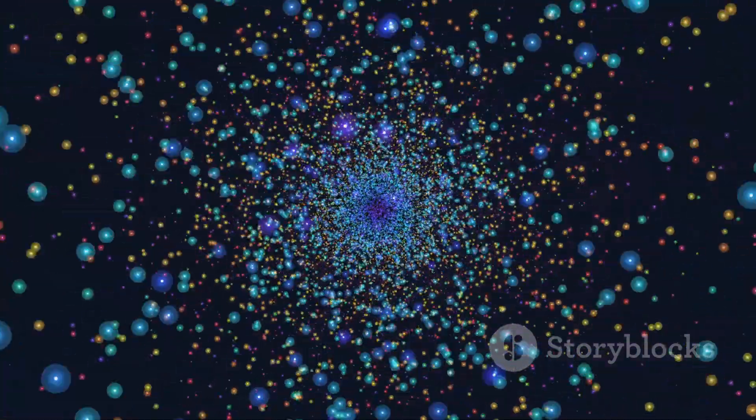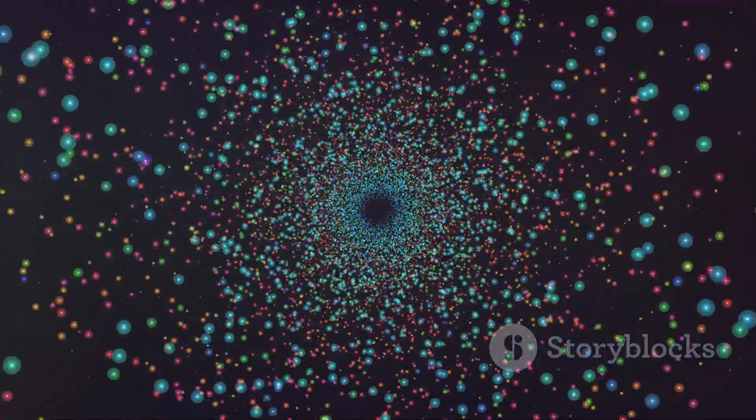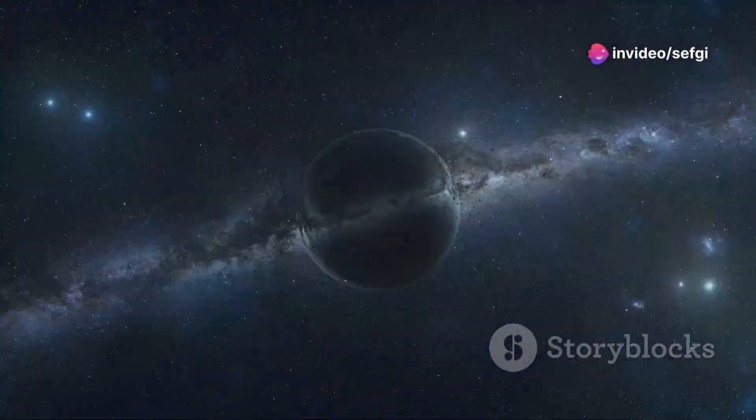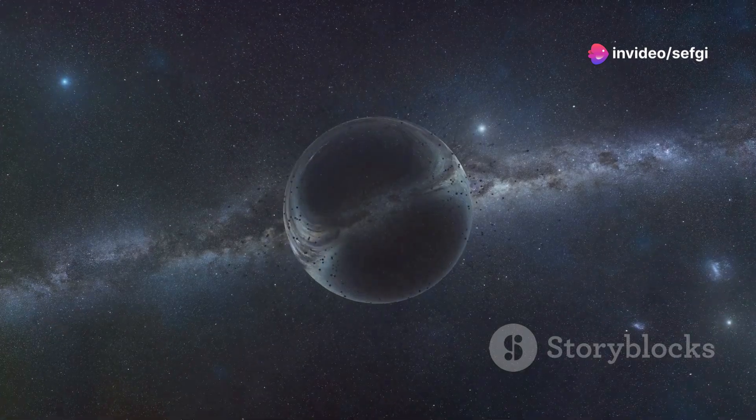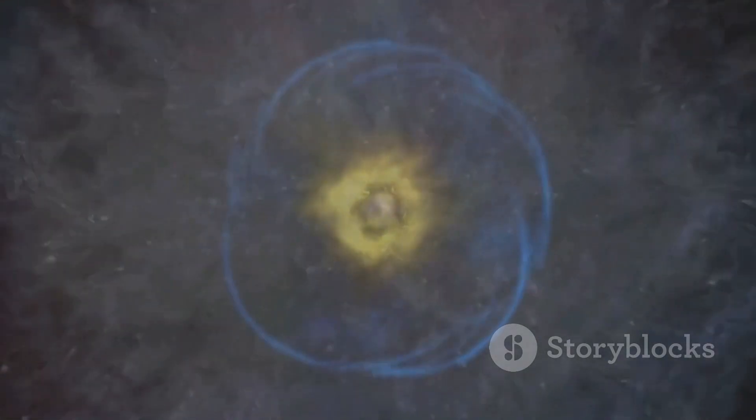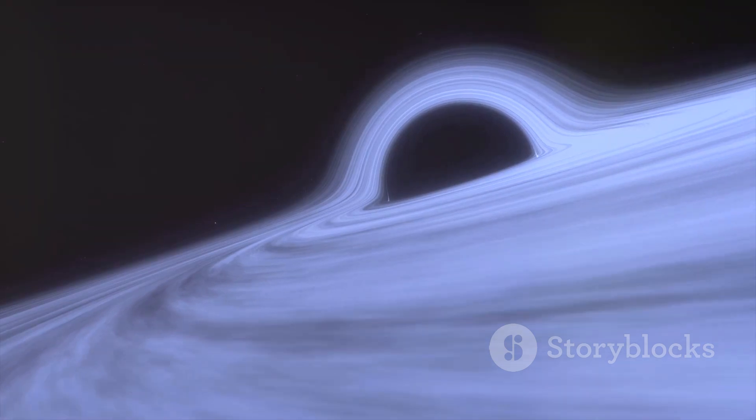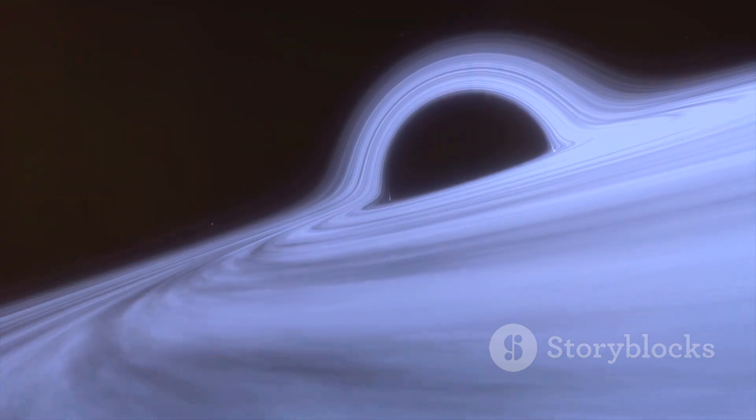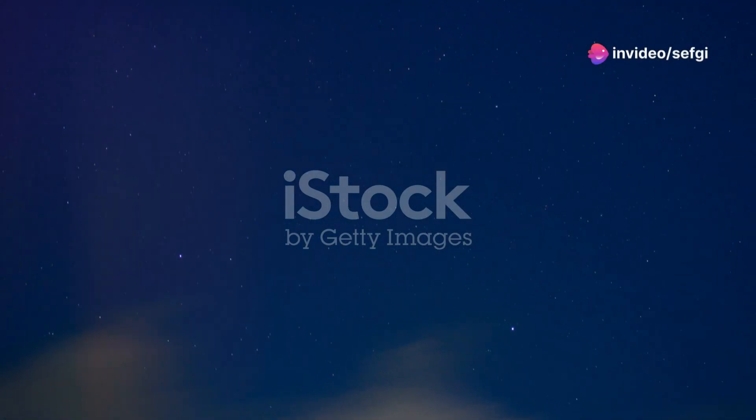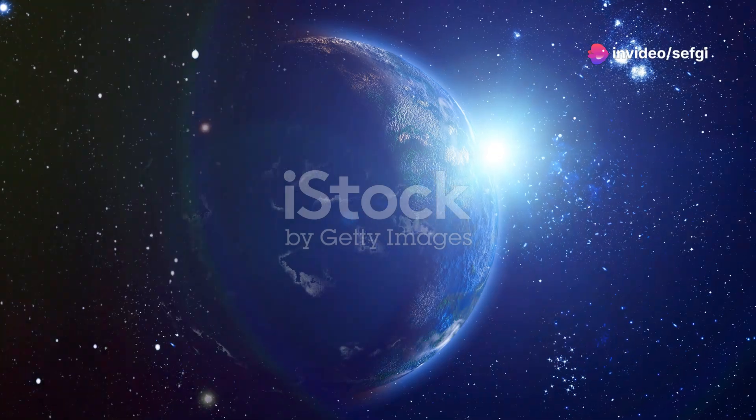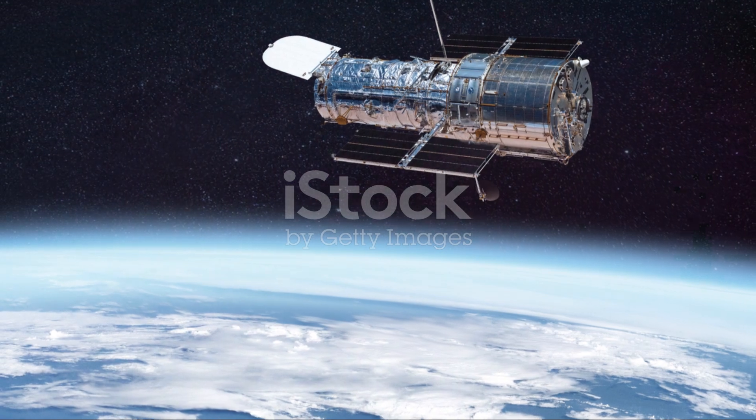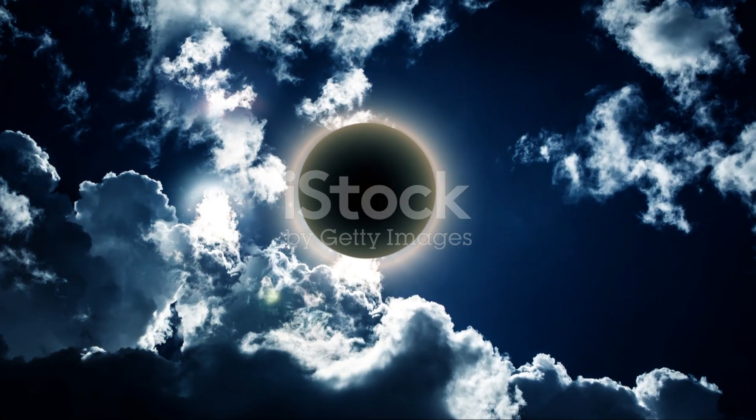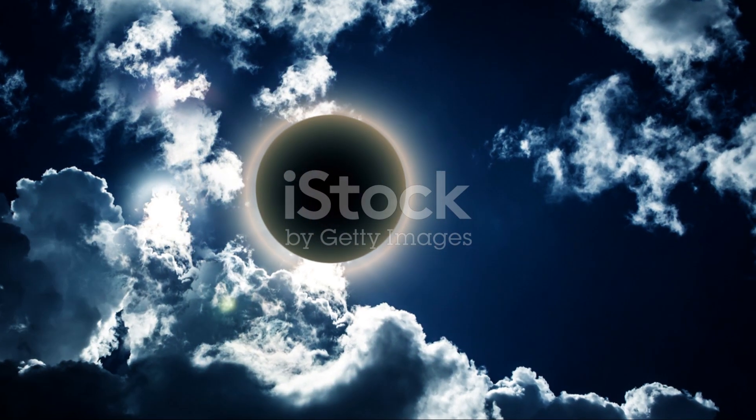This background radiation, the afterglow of the Big Bang, is detectable in every direction we look and is remarkably uniform across the sky. However, its slight variations and anomalies suggest influences of other universes on our own. These influences, hypothesized by some theorists, could be the gravitational effects of other universes on ours. Such evidence is not conclusive but provides intriguing hints that our universe might be part of a much larger multiverse. As technology and methods for observing the universe improve, we may find more clues that support or refute the existence of other universes.